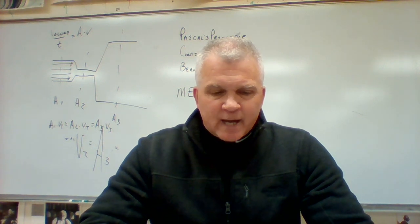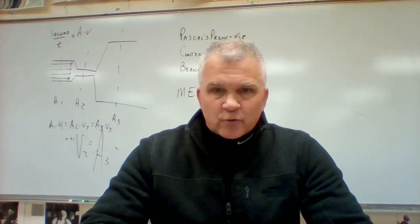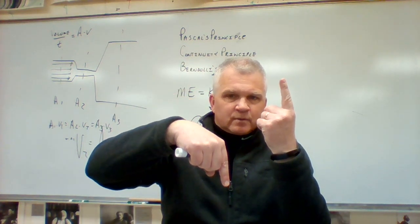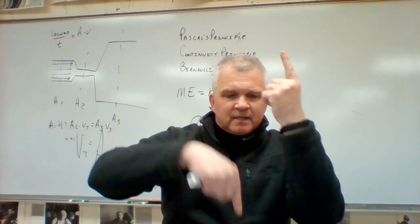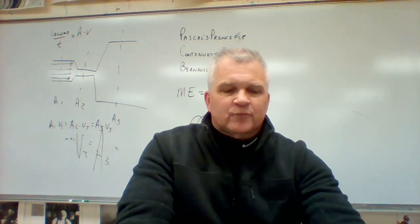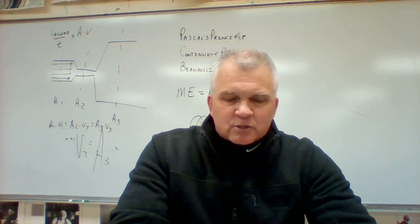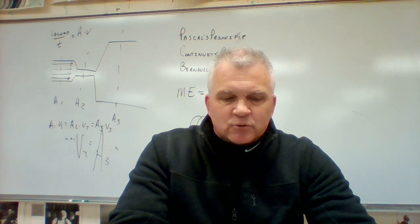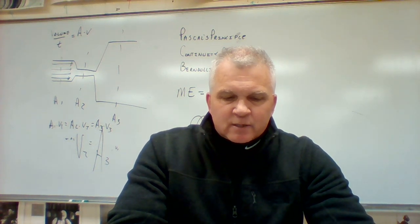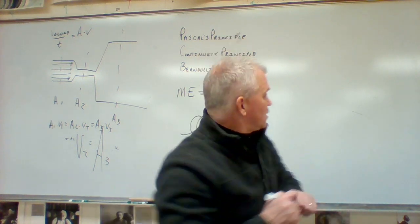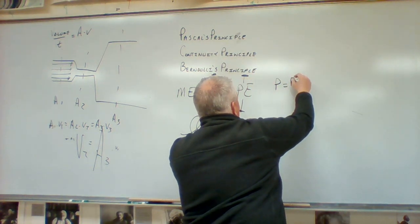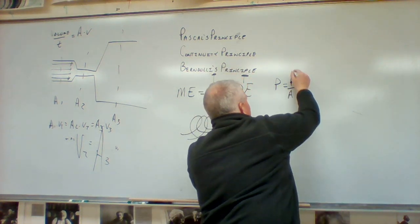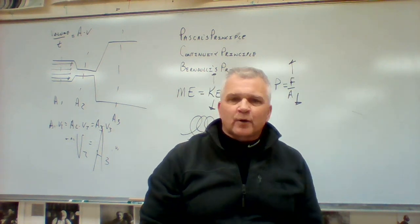If the buoyant force is up and the weight force is down, and the object is floating, those two forces have to be equal. So all floating objects displace an amount of fluid equal to their weight. Archimedes' principle states the buoyant force equals the weight of the fluid displaced — so number three would be weight. Number four: to increase pressure, pressure equals force divided by area, so you could increase the force or decrease the area — sharpen the object.